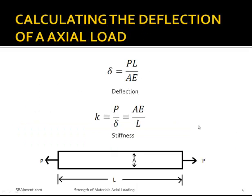Now I'm going to talk about how you would calculate the deflection of a bar that is under axial loading. To calculate deflection, you would use the equation shown here: force times length divided by area times Young's modulus. It is important to note that this deflection equation only takes into consideration a constant area. If your area is not constant, you would have to use calculus to modify this equation to account for the change in area across the length.